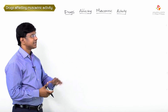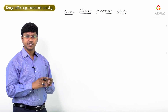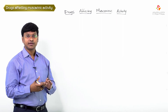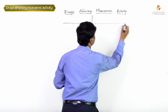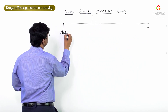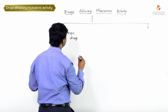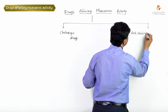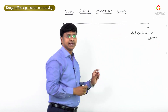Let me discuss the drugs affecting the muscarinic activity. We have discussed the muscarinic action and the nicotinic action. The drugs affecting the muscarinic activity fall into two groups: cholinergic drugs and anti-cholinergic drugs.